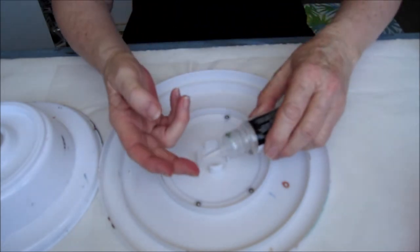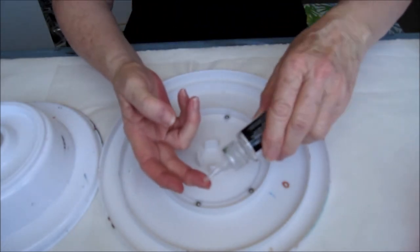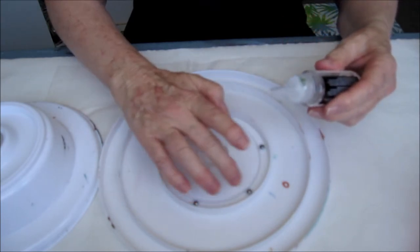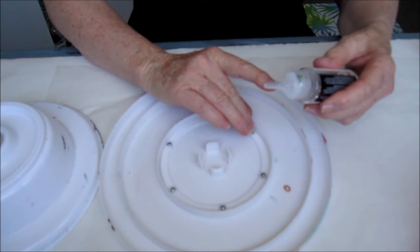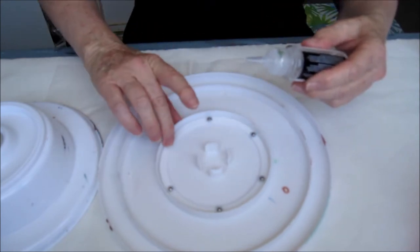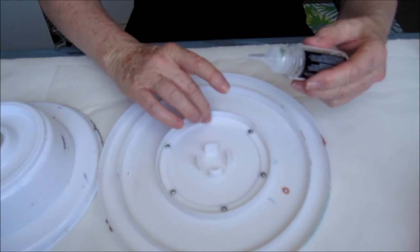What I do is I just put a dab onto my finger and I dot it around the ball bearings just to make them move easier. I've found that it also cuts down the noise level as it's spinning around.